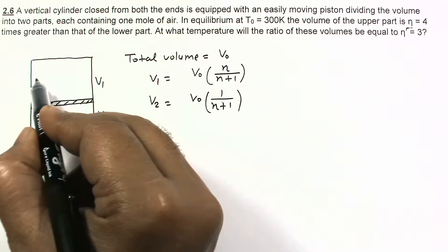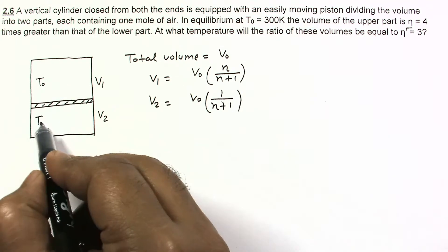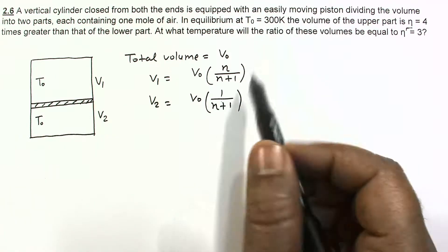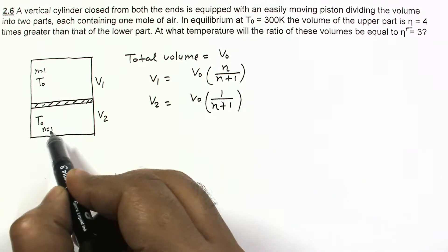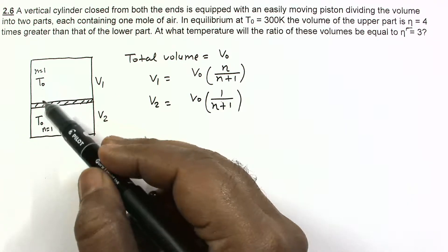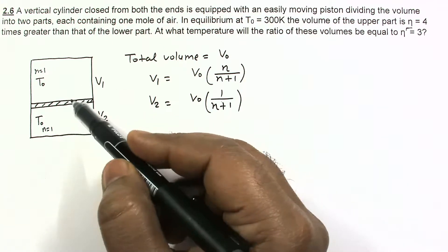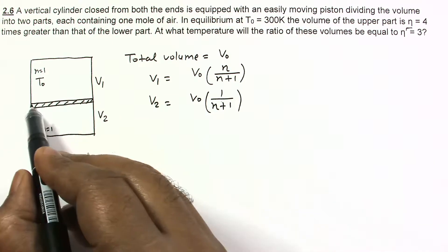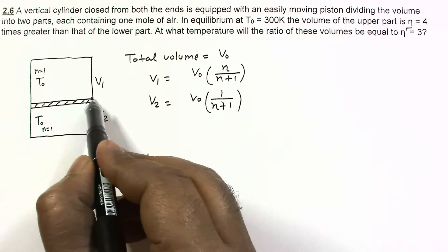Initially, the temperature in both parts is T0 = 300K, and the number of moles in both parts is equal to 1. Since the number of moles are equal and temperature is equal, but volumes are different, the pressure will also be different.